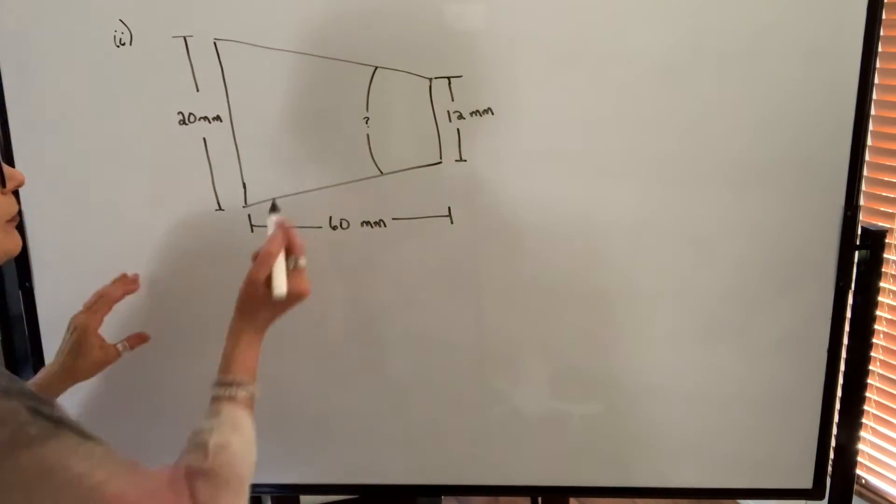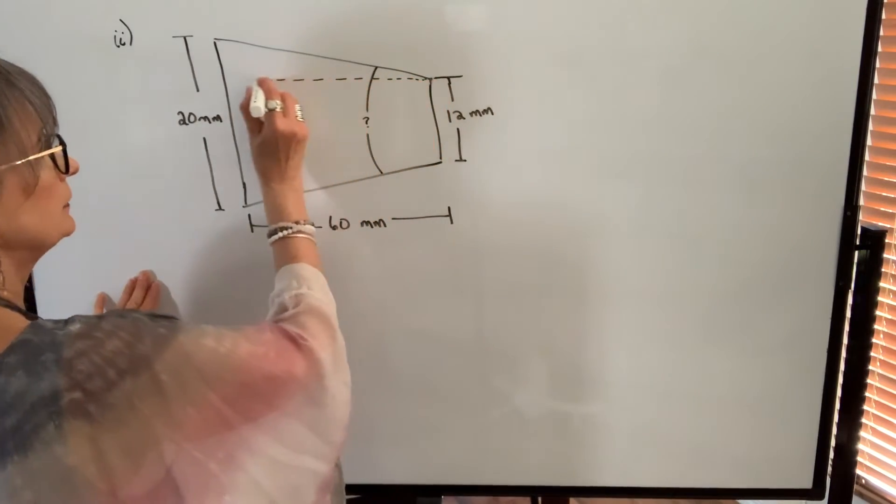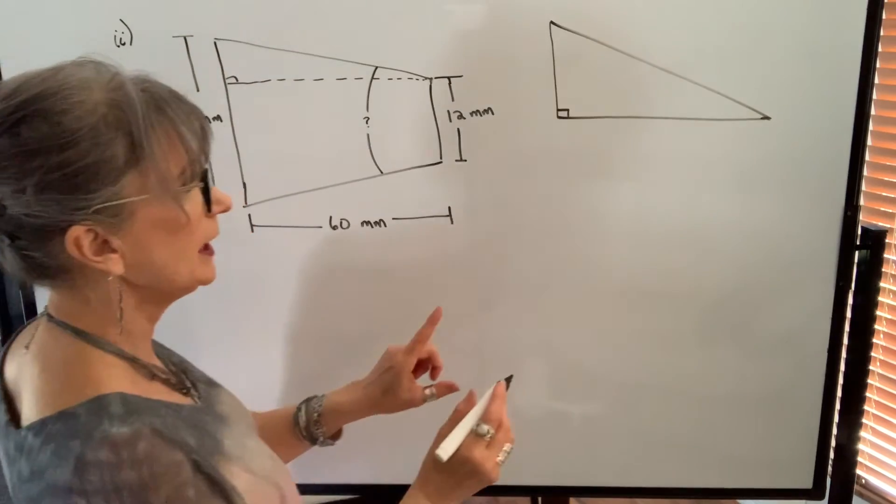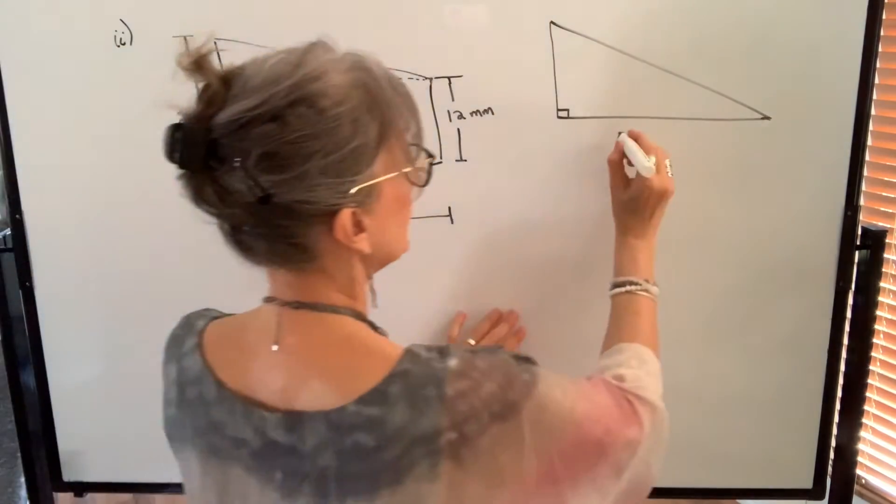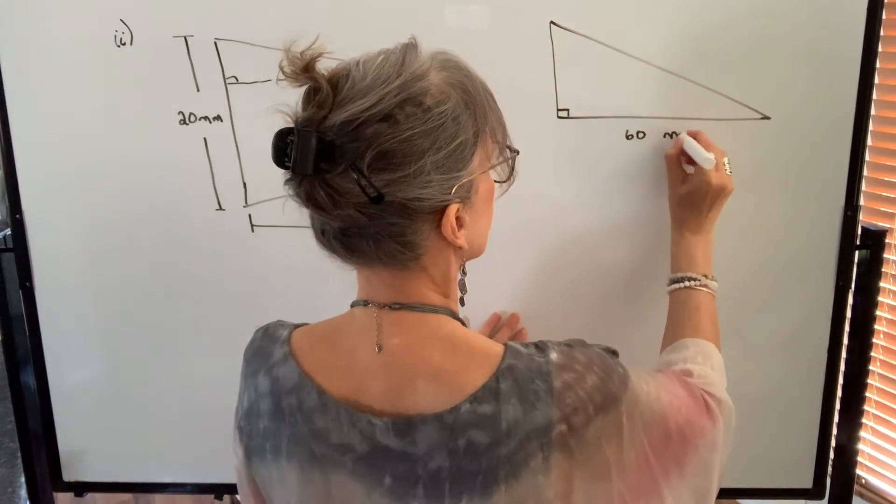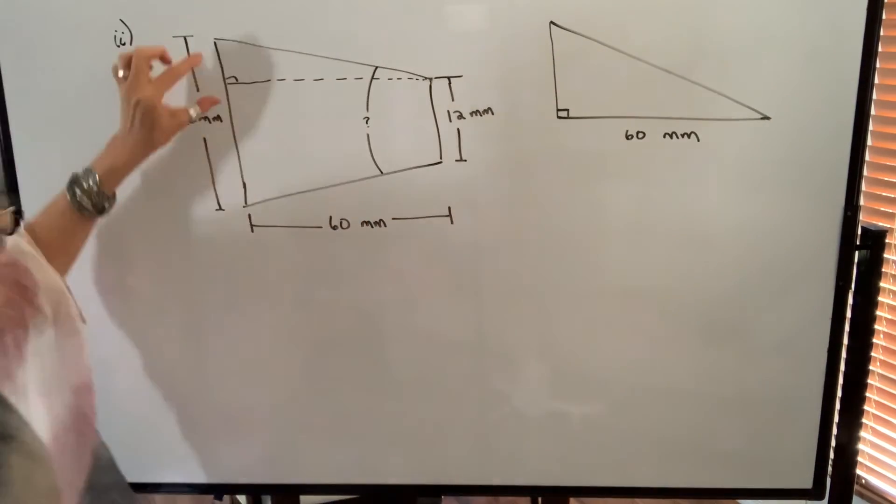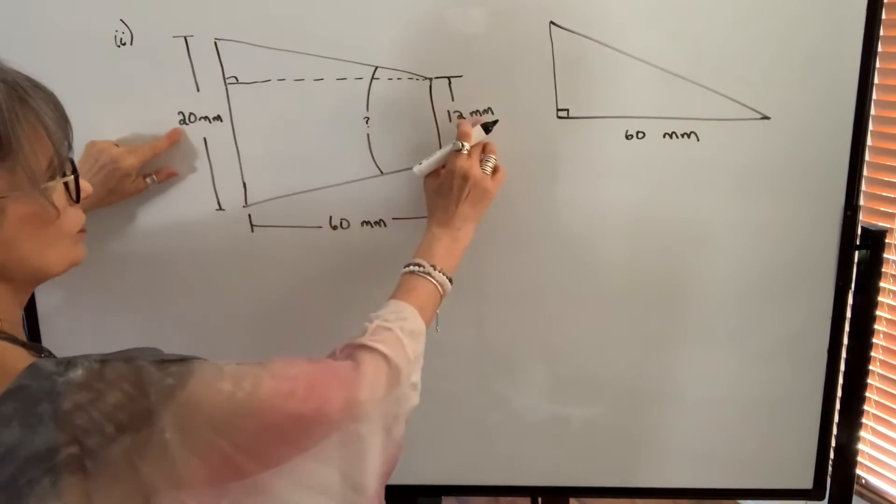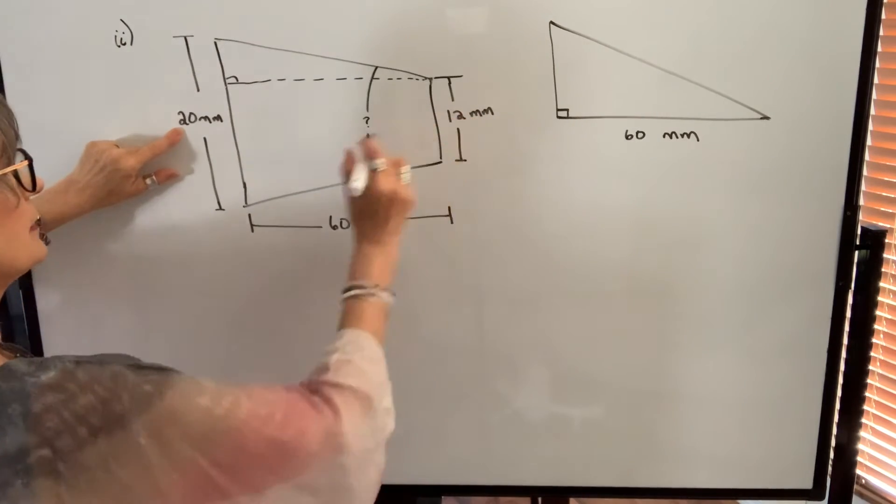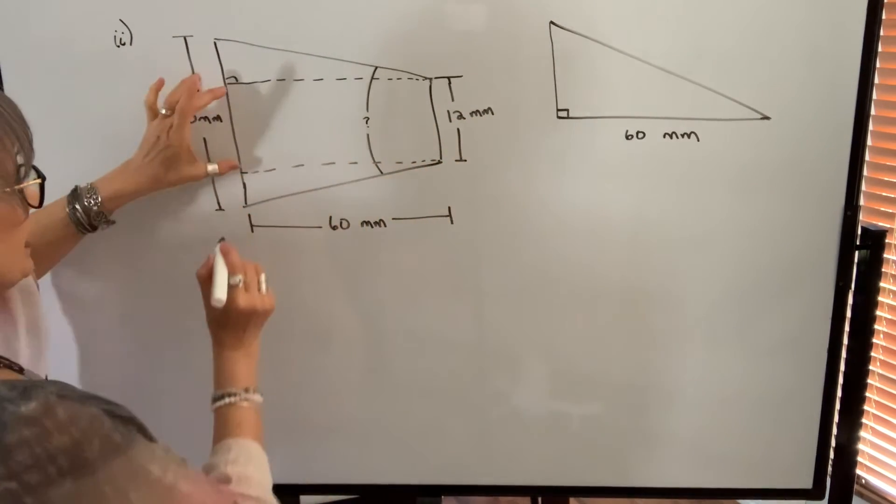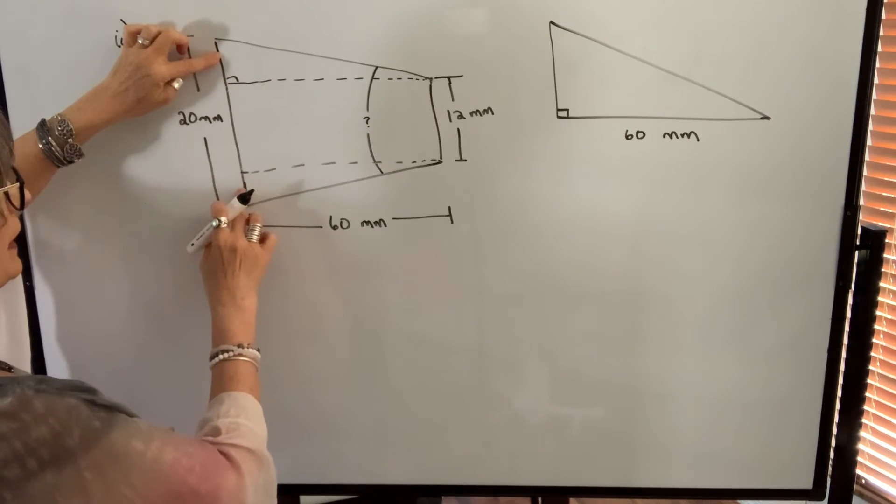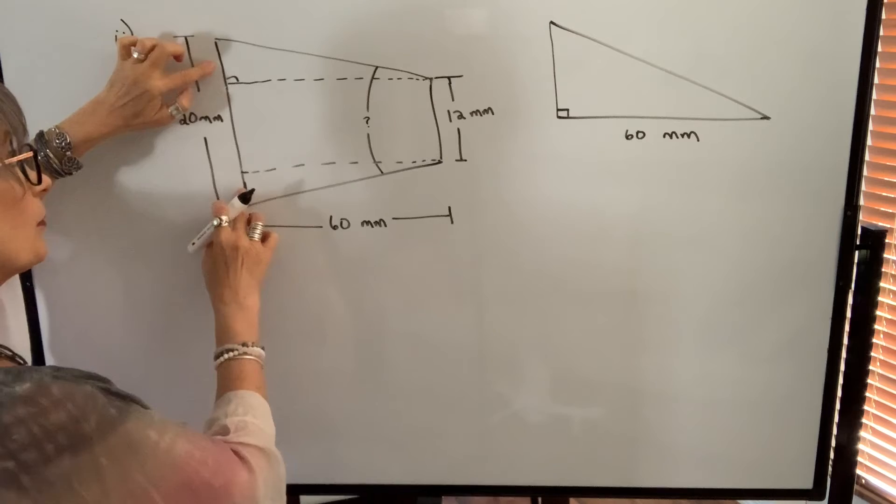So again I'm going to take this right triangle. I can take either the top one or the bottom one. It doesn't matter. I label what I know. This length here is 60 millimeters. This length here will be 20 minus 12 which is 8. So this distance right here is 12. Therefore this plus this will be 8 millimeters. Therefore this will be 4 millimeters.